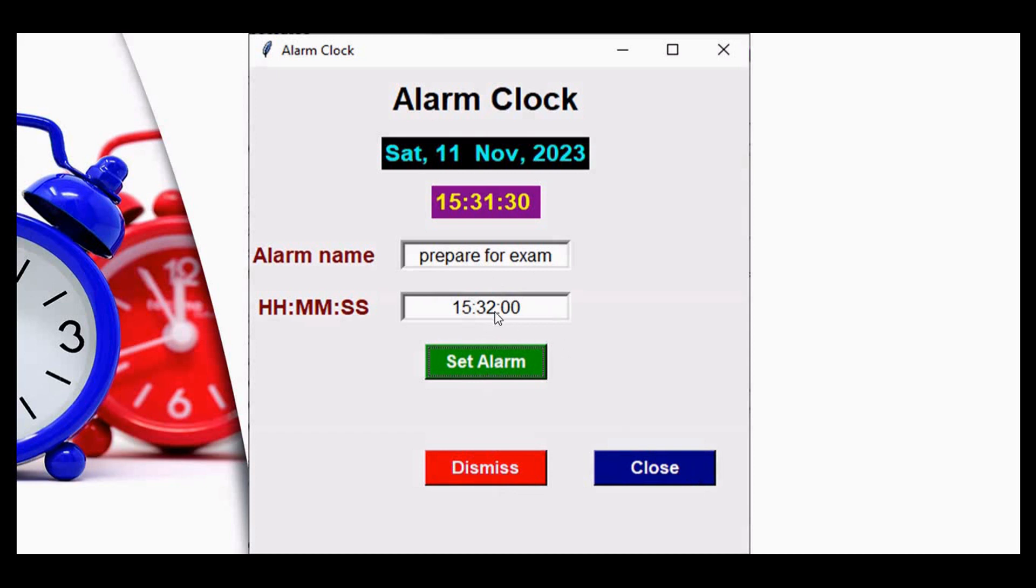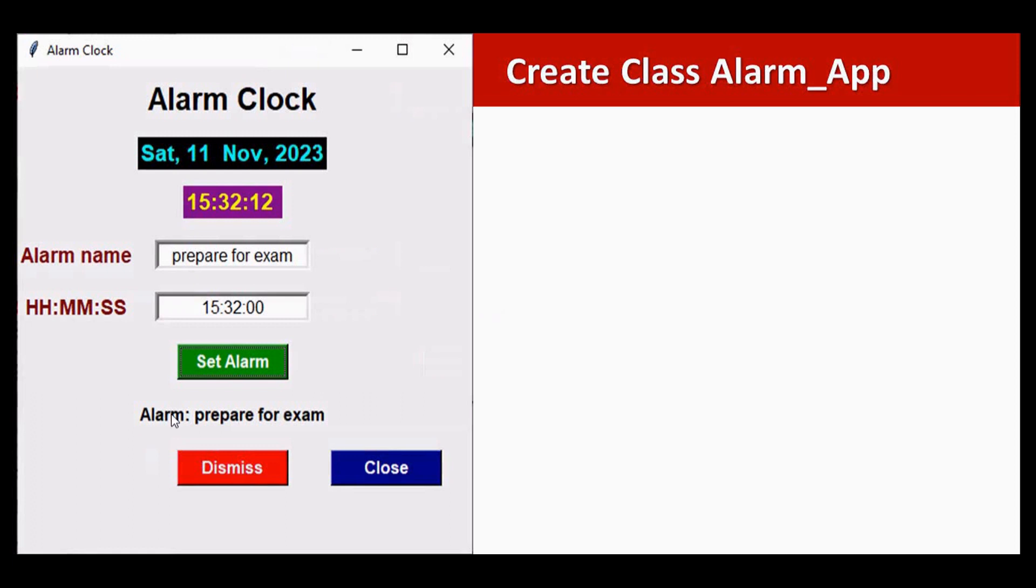There are three buttons: set alarm, dismiss, and close. Once the current time reaches input alarm time, the alarm will be ringing. When the alarm is ringing we also have this message 'Alarm' and the alarm name which the user has entered. The alarm will be ringing continuously; only if you press the dismiss button the alarm will be turned off.